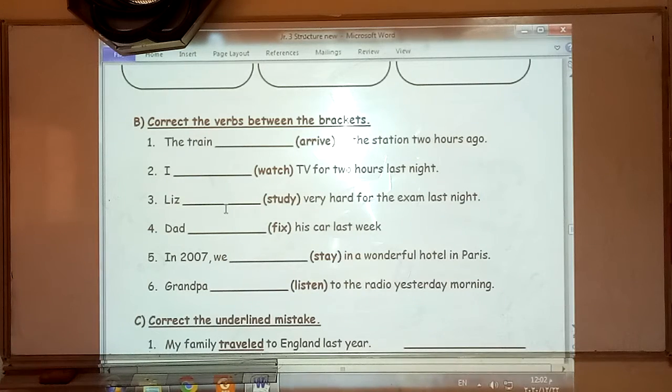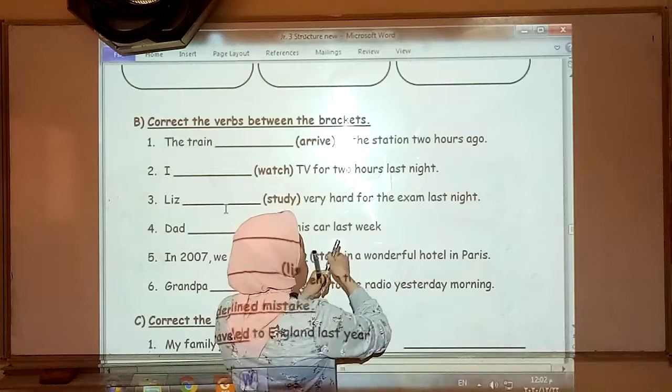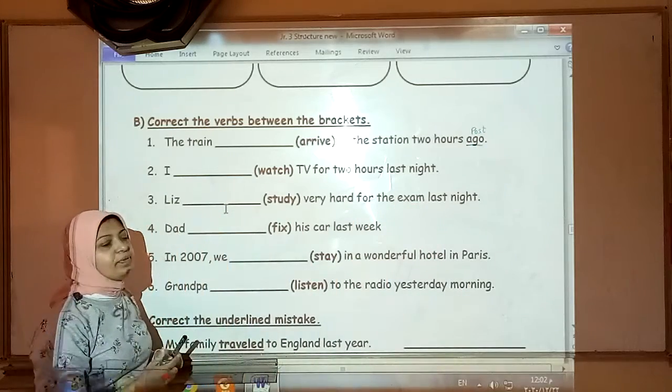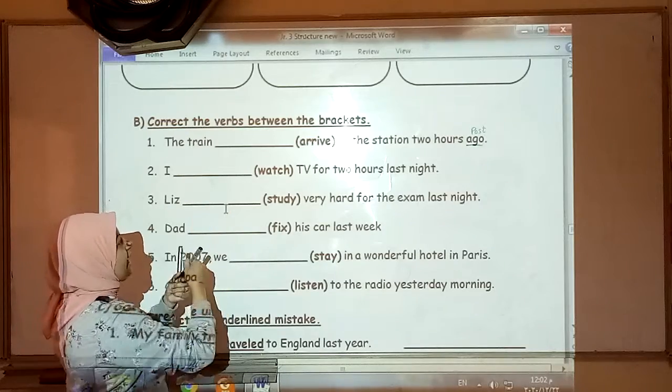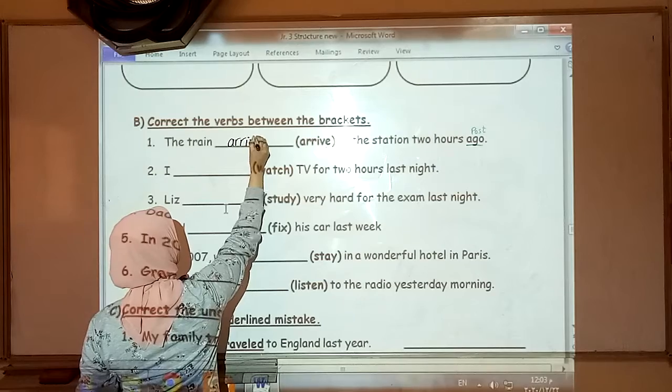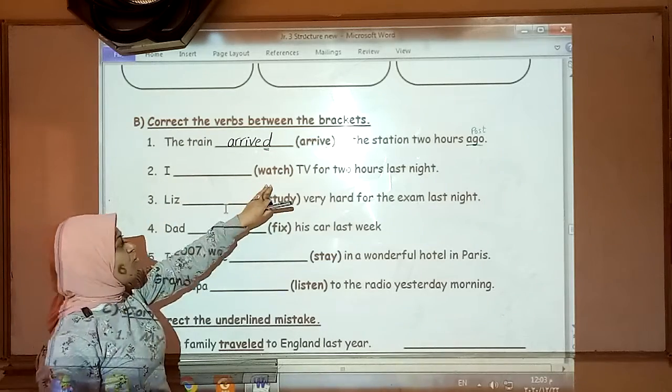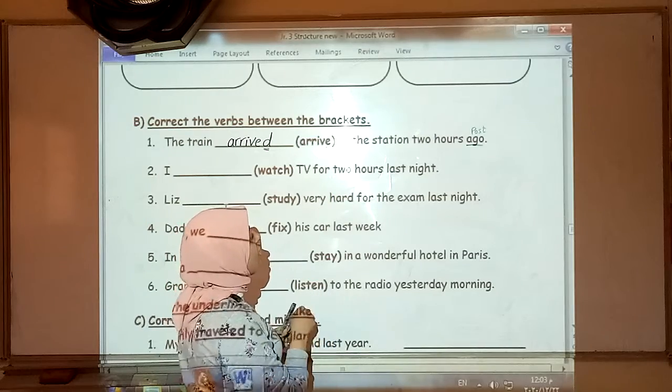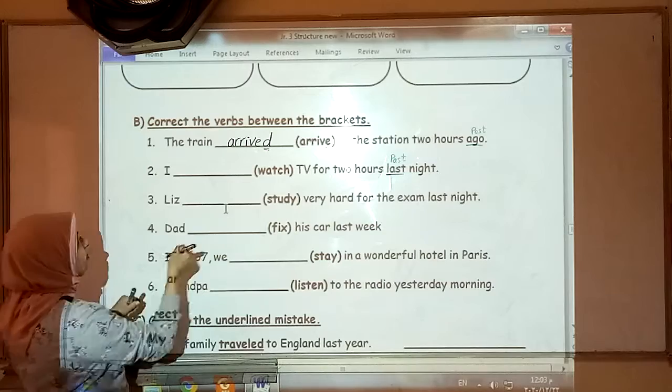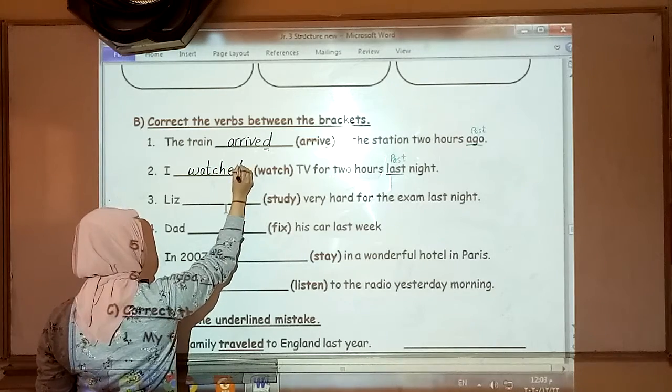Let's go to the next exercise. Correct the verbs between the brackets. The train arrived at the station two hours ago. Now, we must take care of the key word, past, to know which tense we are going to put the verb in. It ends in E, so we are going to add to it D only. Arrived. Okay? I watched TV for two hours last night. Last, love the past. Watch. Normal verb. We are going to add to it, that's correct, ED. Watched.